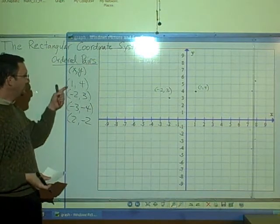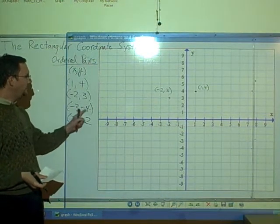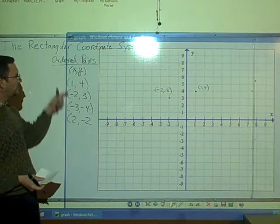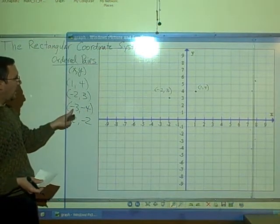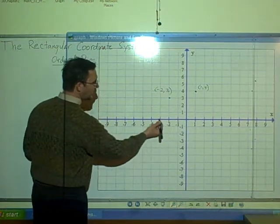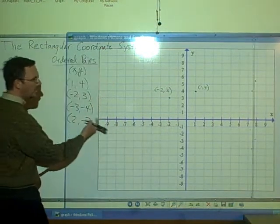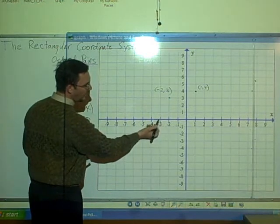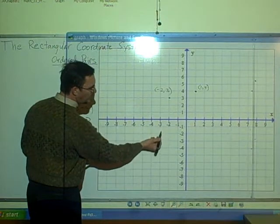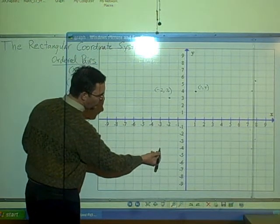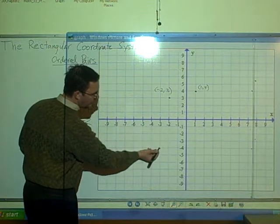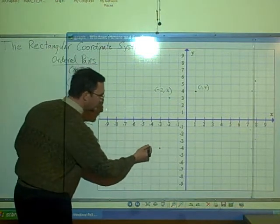Our next example has negative numbers as both values of x and y. So for x, on the x-axis, go over to x equals negative 3. Then y is also negative. So when I get over to negative 3, I go down 4 units. 1, 2, 3, 4. So I'm now at x equals negative 3, y equals negative 4.